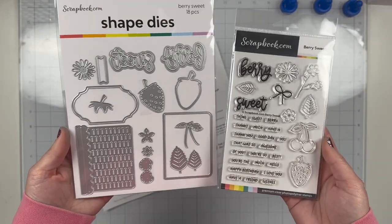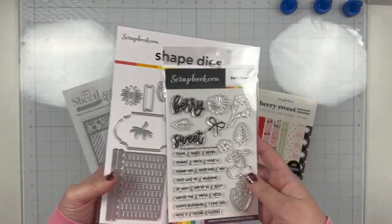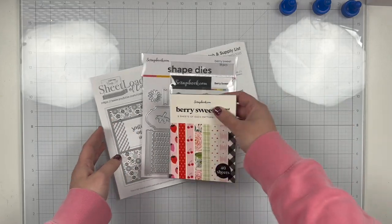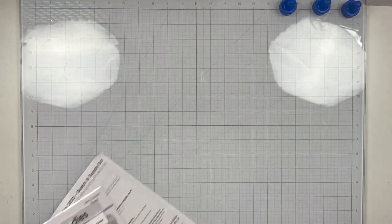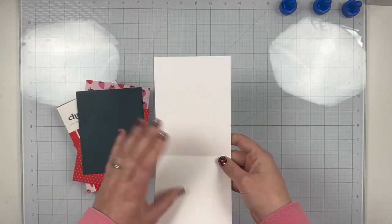These are the Berry Sweet products. There is a die set, a stamp set, and of course that paper pad that I just showed. I end up not using the stamp set on this card, but I did want to show you the whole collection.